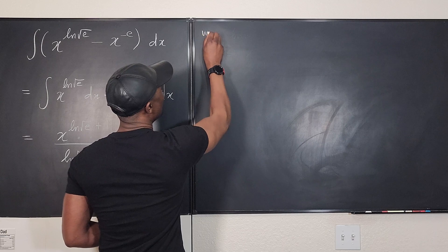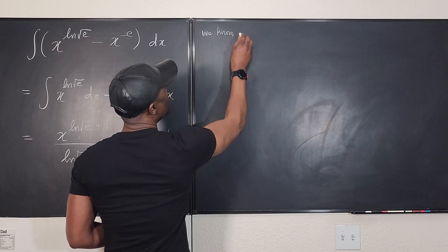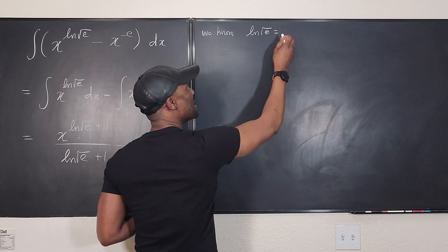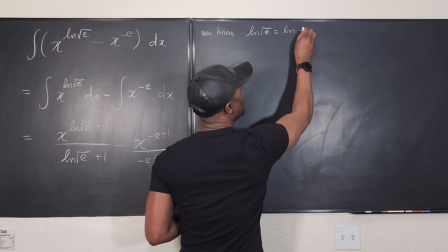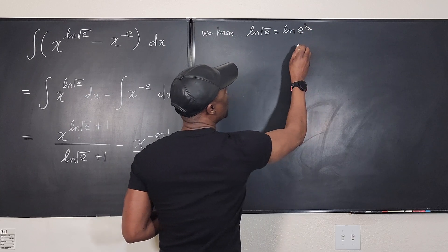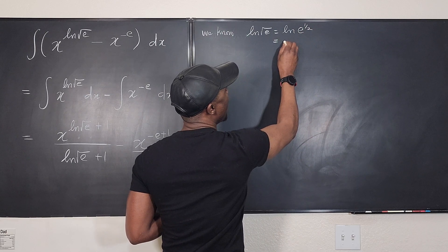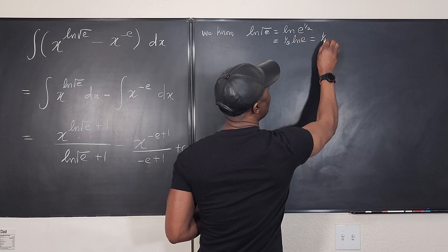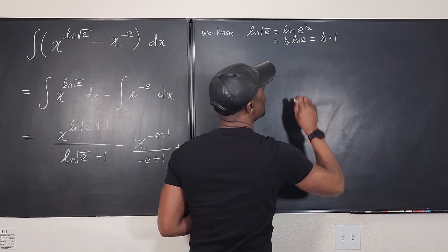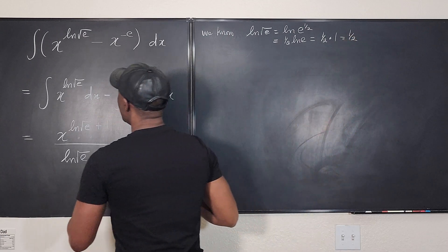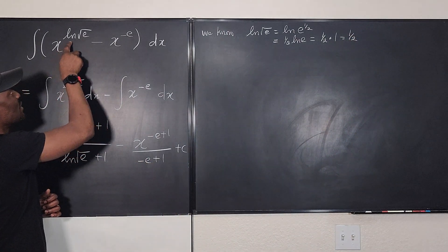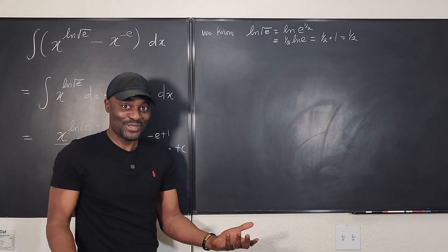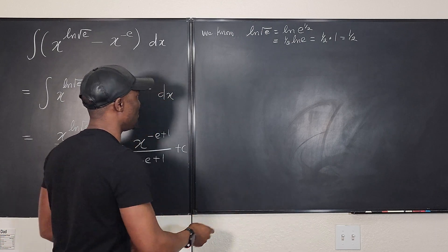We know that the natural log of the square root of E could have been written as the natural log of E to the one half, which we say is the same thing as one half times the natural log of E, which is equal to one half multiplied by one. Well, that's one half. So you see the initial problem could have been X raised to power one half. That could have been the exponent to be easier for you to say, I know how to do this. So let's just do that.